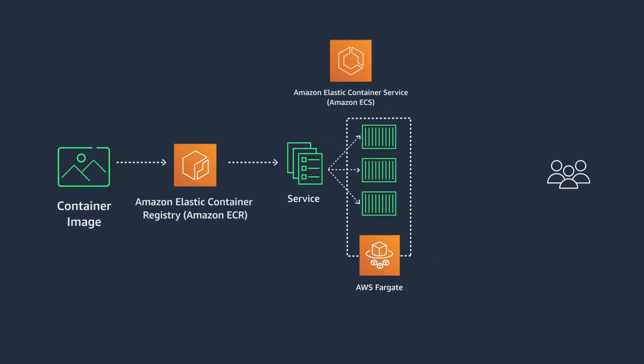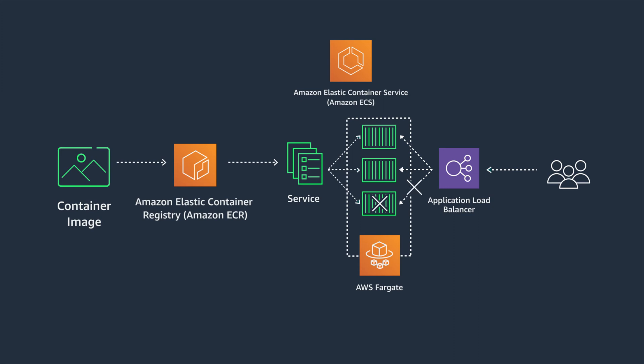To distribute my users between my containers, I'm going to require an AWS Elastic Load Balancer, which tightly integrates with Amazon ECS service to automatically send traffic to all my containers. And if one of my containers becomes unhealthy, the Load Balancer will stop sending any traffic to it, and ECS will restart the broken container and attempt to resolve the problem.